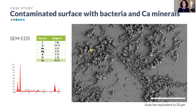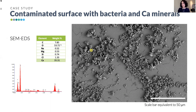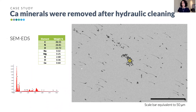After contamination with produced water, we found elongated shapes on the surface — identified as bacteria — and solids on top of them which we identified as calcium carbonates, based on high calcium, carbon, and oxygen content from SEM-EDS analysis. After hydraulic cleaning, most solids were removed, and what remained was primarily bacteria — identified by shape and composition showing high carbon, nitrogen, and oxygen levels.